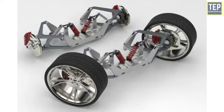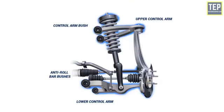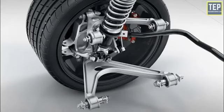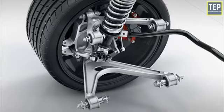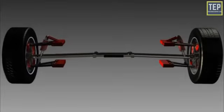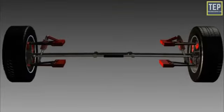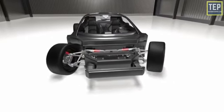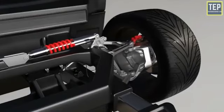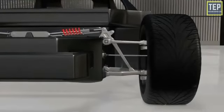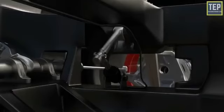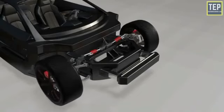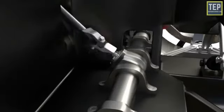In the double wishbone suspension system, the wheel is mounted on the wheel hub, which is provided with two links — an upper link and a lower link — both pivoted to the vehicle frame. A shock absorber is placed between the frame and the lower link with a flexible joint. When the vehicle moves on uneven surfaces, shocks are transferred to the shock absorber through the lower link. The upper link maintains the camber of the wheel. This system is complex, costly, and requires more space.